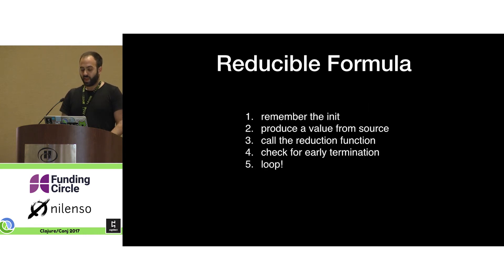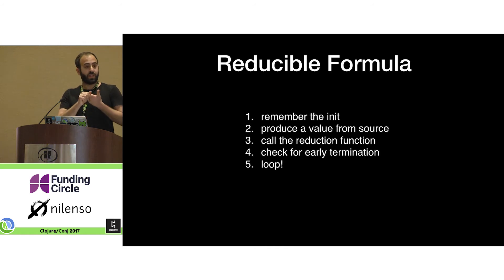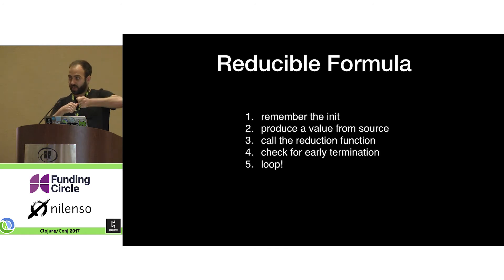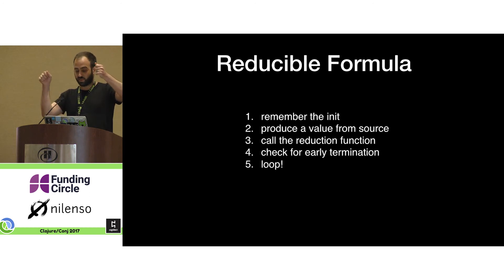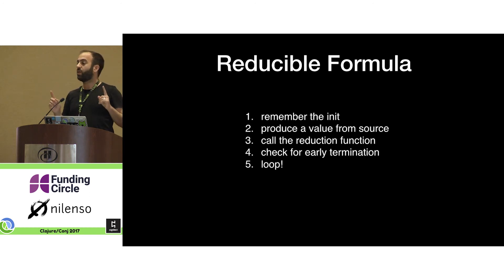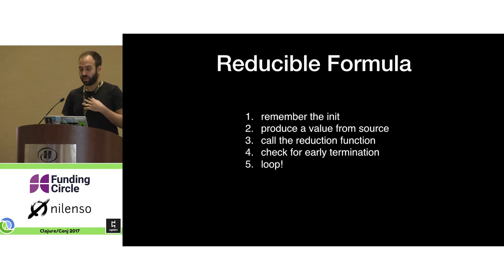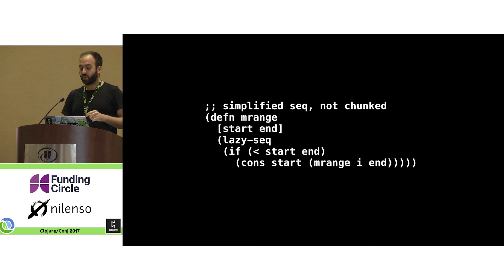Here are the steps broken down. First, you remember your init value. Then you start producing values and call the reduction function on those values. You check whether the reduction function told you to stop. And finally, you loop back to the top.